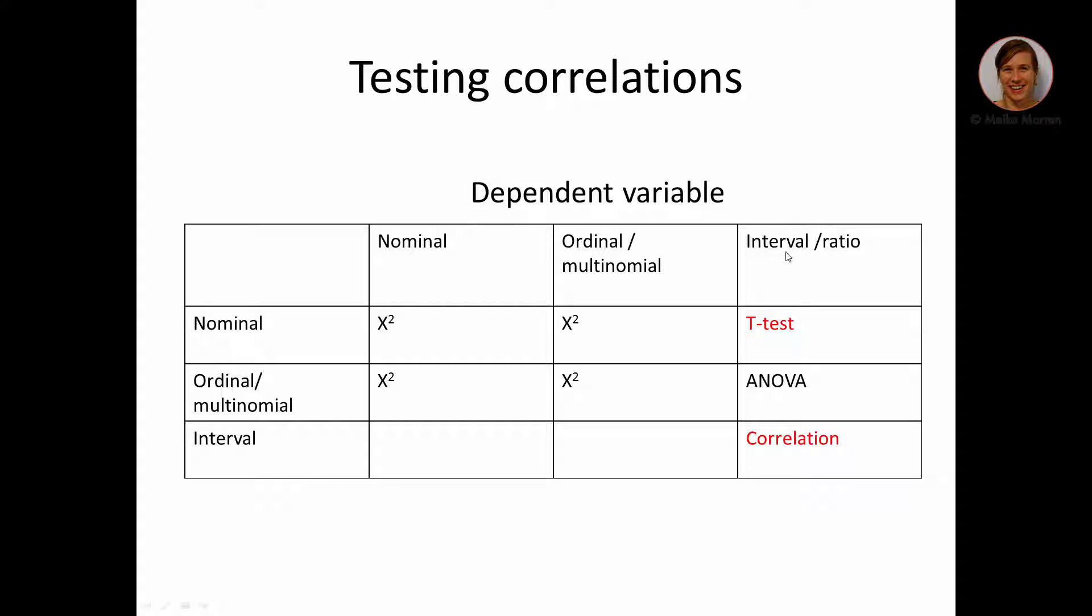If you have an interval ratio level variable, like the income scales that we used in the last video, then depending on how many groups you want to compare, you would need the t-test or the ANOVA test. If you compare two groups, meaning for instance gender, you would need a t-test. But if there are multiple groups, which can be interpreted as a multinominal variable, then you would need an ANOVA test.